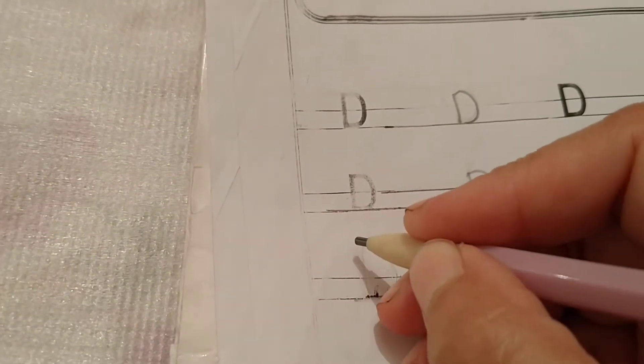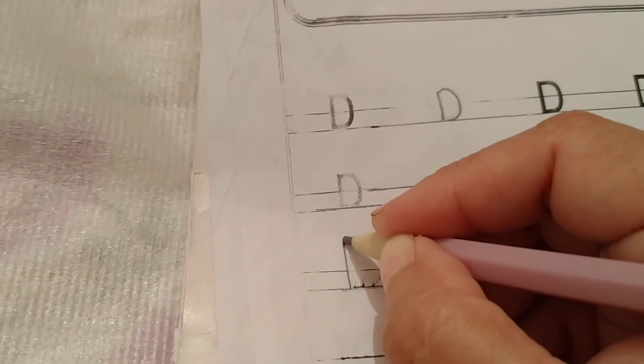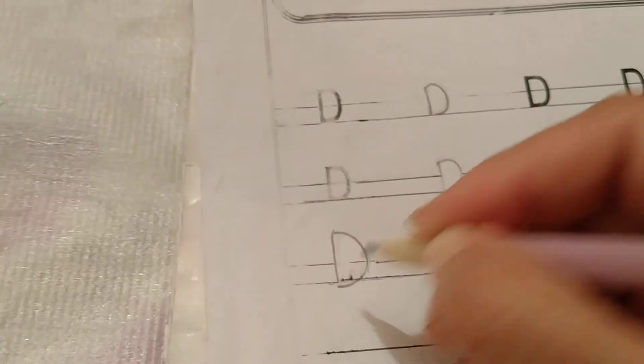How to write letter D, capital D, straight line from top to bottom. Then from top to bottom we do curve.